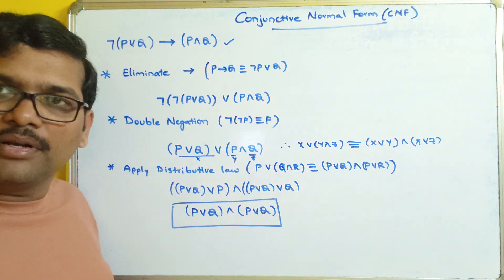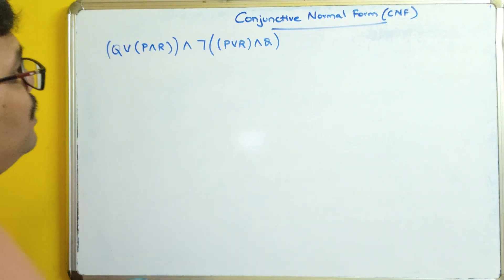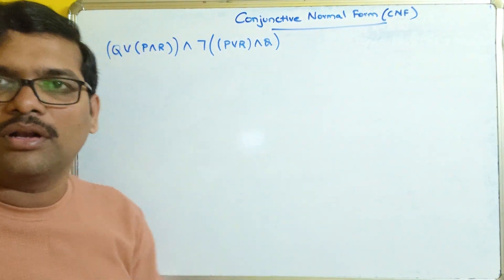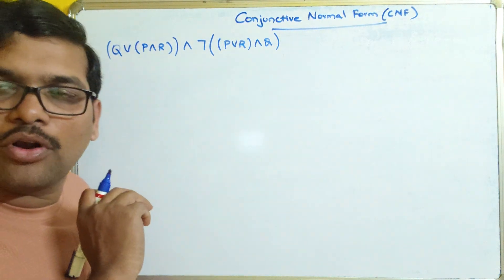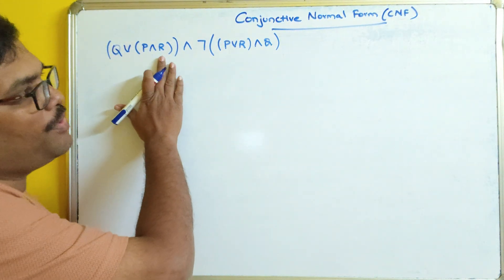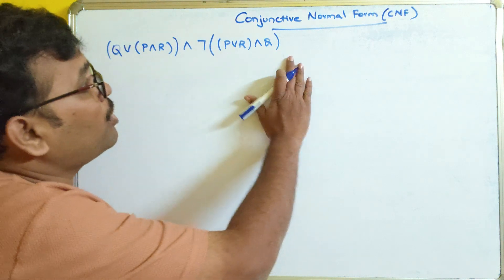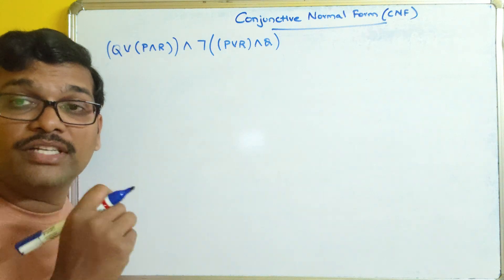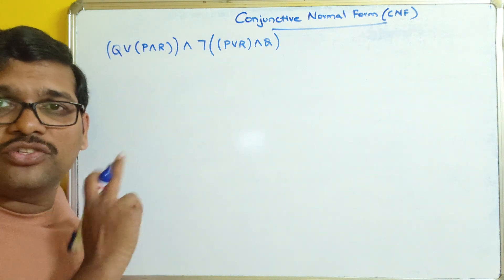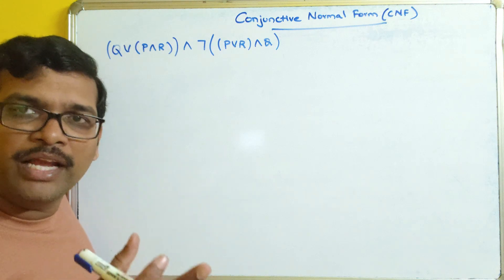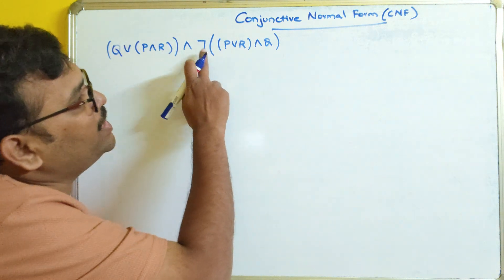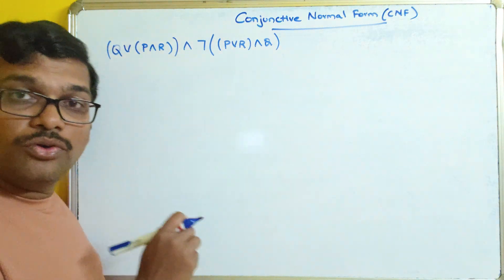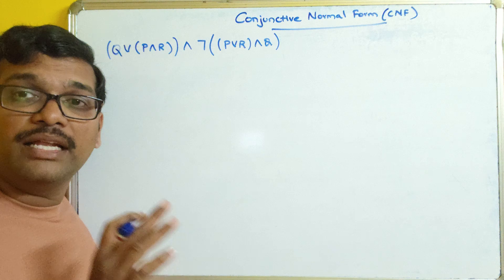Let us see one more example. Check whether the formula is in CNF or not. Obviously it is not in CNF — it is not a product of elementary sums. This is not an elementary sum, and neither is this. Since there is no conditional or bi-conditional in this formula, we skip step one. What we do have is a negation for a complete elementary sum or product, so we apply De Morgan's law.